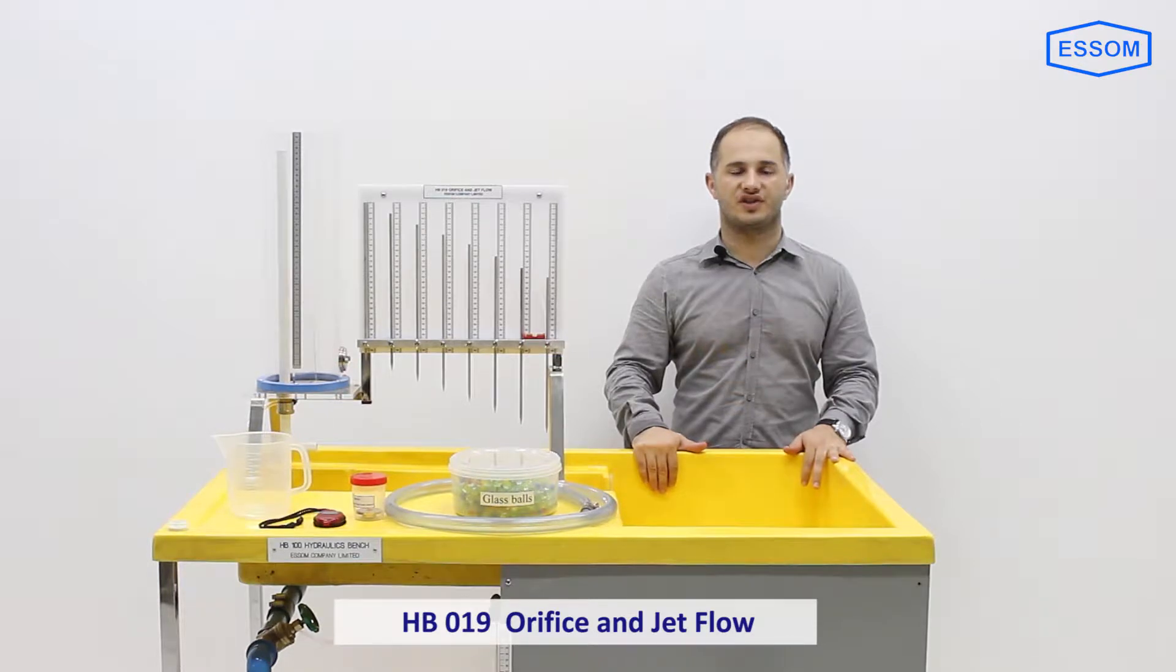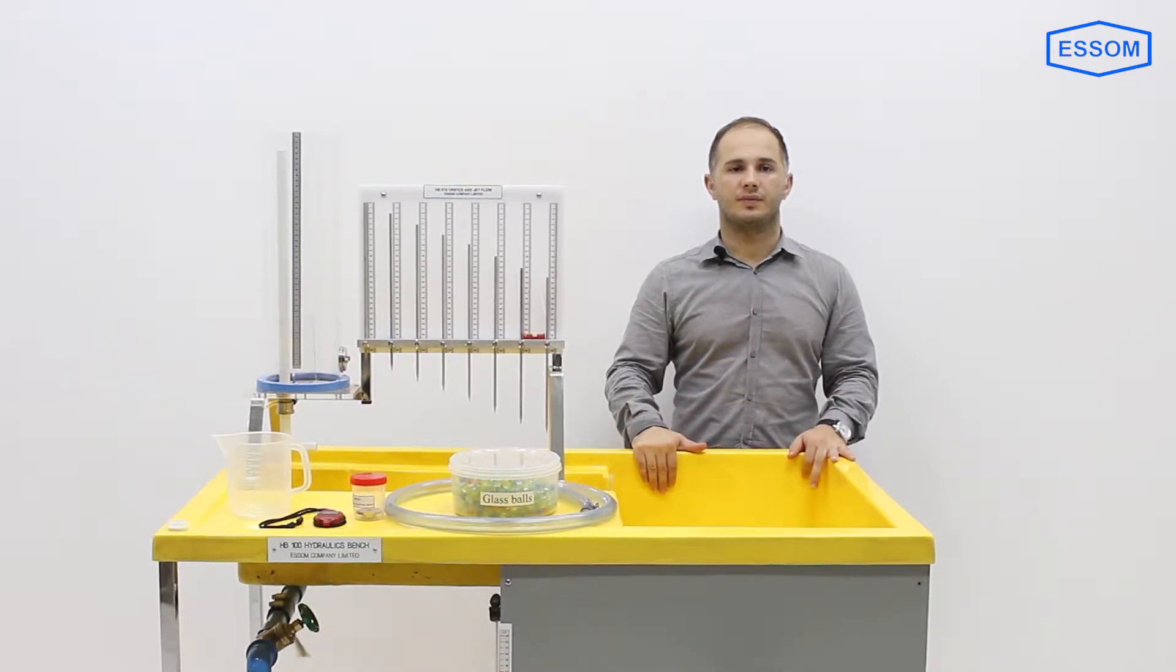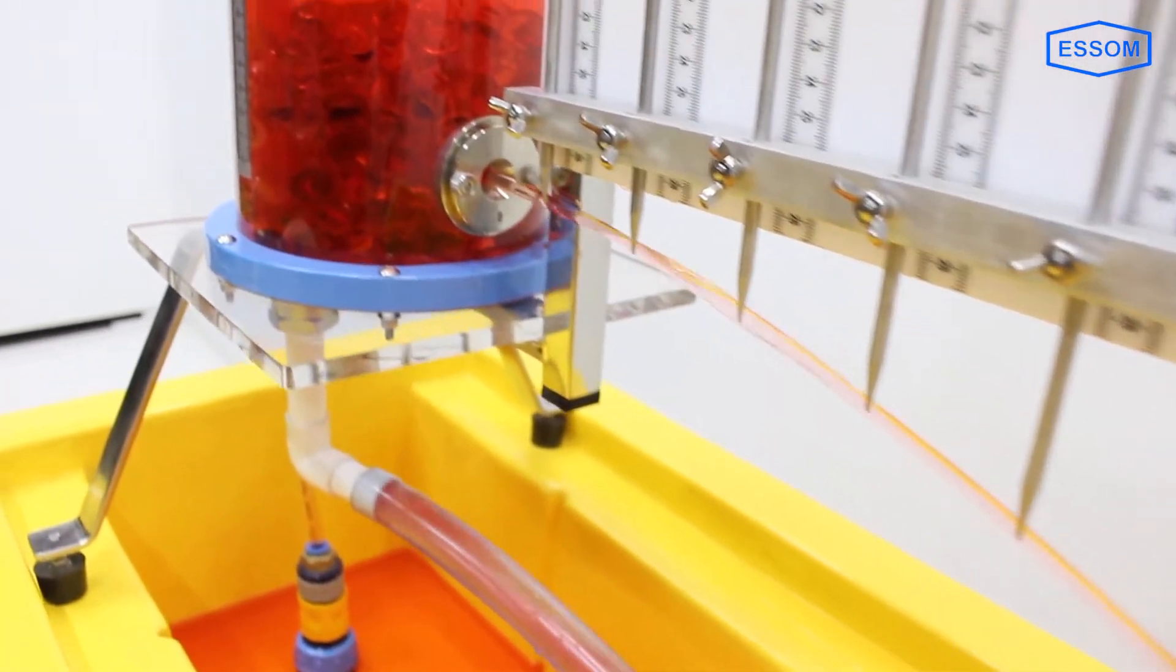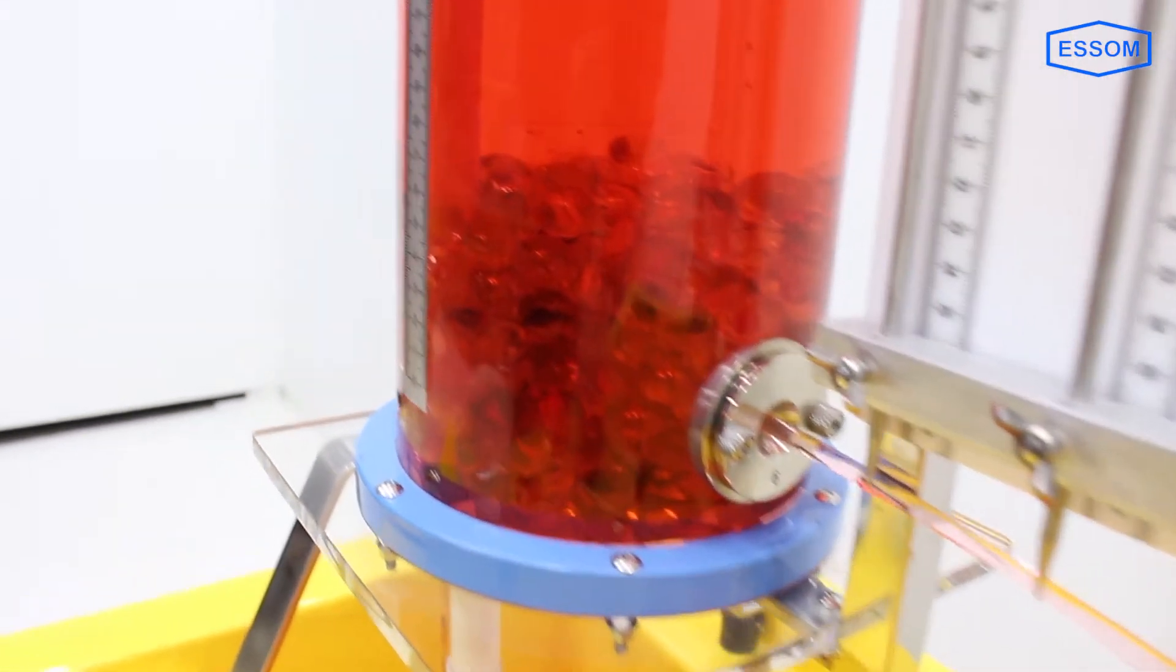HB 019 Orifice and Jet Flow. This equipment allows determination of coefficients of velocity and coefficients of discharge under various constant heads for two different orifice diameters.